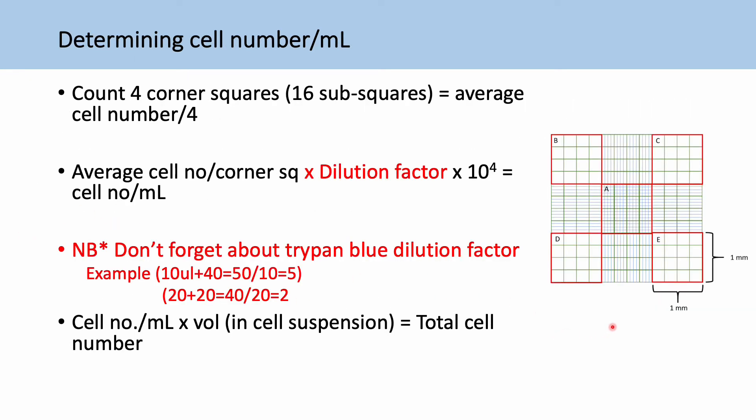So again, we're going to be counting in the B, C, D and E, the corners. And then dividing that number, getting the average of those numbers.